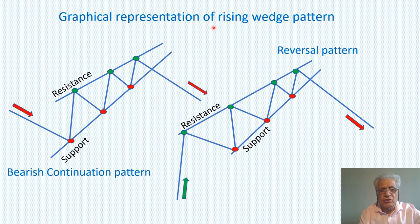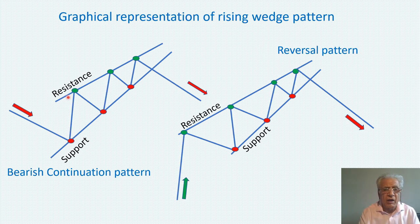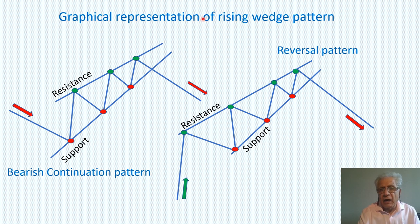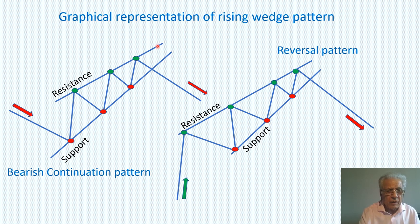This is a graphical representation of a rising wedge pattern. A rising wedge is a price move pattern that forms when the market makes higher highs and also higher lows, and consolidates between resistance and support levels. The two lines of resistance and support must point in an upward direction and intersect each other somewhere outside from left to right. The support line climbs at a greater angle than the resistance line, indicating that the higher lows are being formed faster than the higher highs.